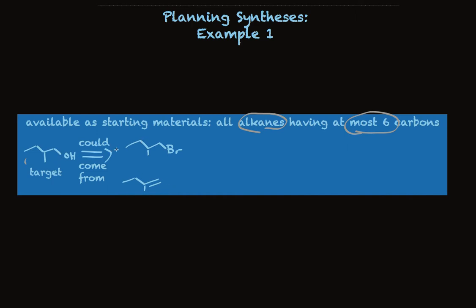In this case, this would be an SN2 reaction, replacing the primary bromide with hydroxide. And in this case, it would be anti-Markovnikov addition of water to an alkene. We know how to do both of those things.